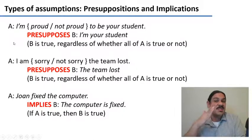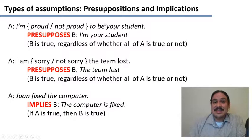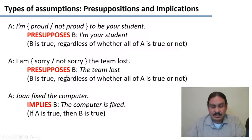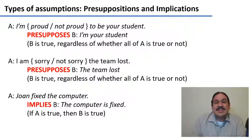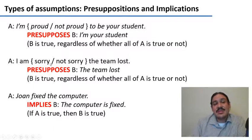So let's say A is false — 'I'm proud to be your student. False.' Even then, it would still presuppose that I'm your student, because in order for me not to be proud, I would still need to be in that situation. Another example: 'I'm sorry the team lost' presupposes the team lost. And even if I say 'I'm sorry your team lost — not really,' it still presupposes that the team lost; only my feelings changed. These A sentences presuppose that the B sentences are true regardless of whether A ultimately turns out to be true or not.